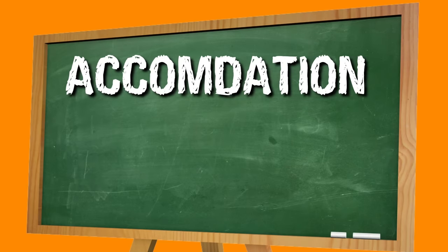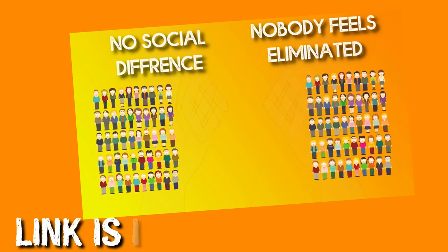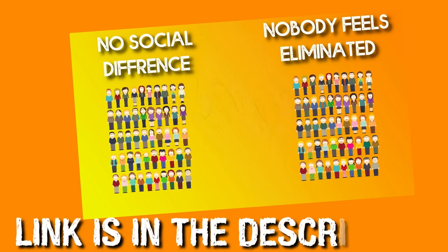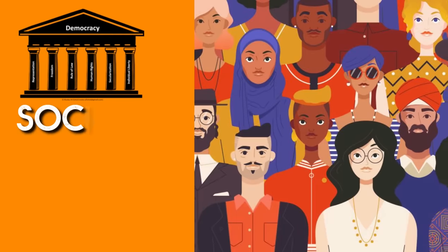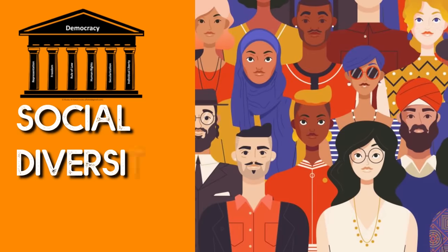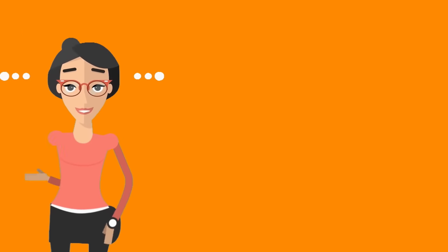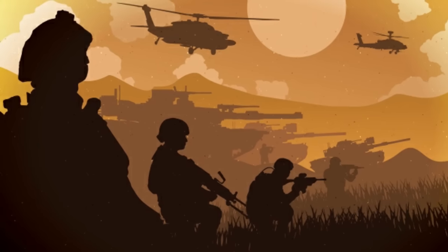Point number four: Accommodation of Social Diversity. In chapter one, we saw how power sharing and democracy solved the religious conflict in Belgium. So if we look at democracy, the best model is to accommodate social diversity. But you may ask — there was also democracy in Sri Lanka, so why did that war happen?